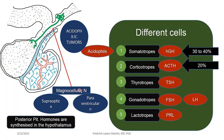The neurons that transport these posterior pituitary hormones are known as magnocellular neurons, and their cell bodies are located in two main parts of the hypothalamus: the supraoptic nucleus and the paraventricular nucleus. These cell bodies synthesize the posterior pituitary hormones, which are then transported in the axoplasm of the magnocellular neuron, released into the posterior pituitary, and secreted into the circulation to bring about the desired effect.